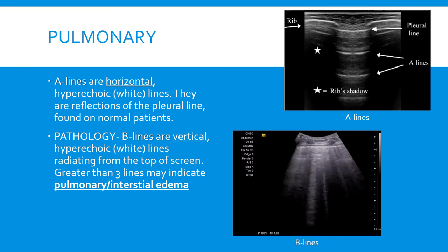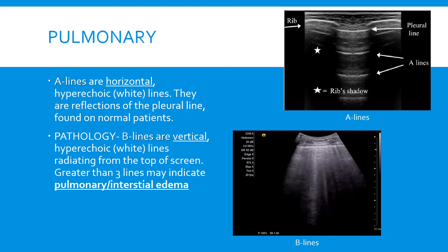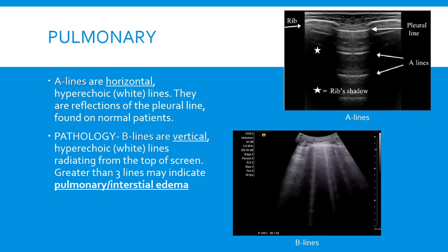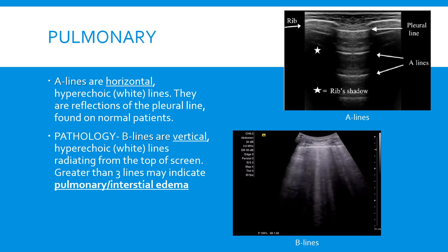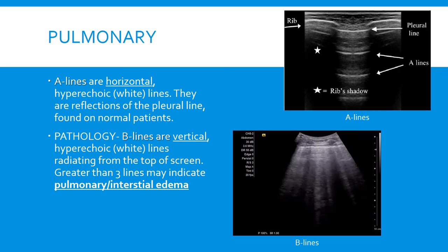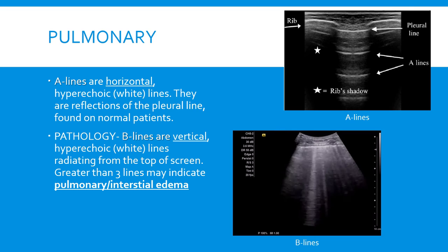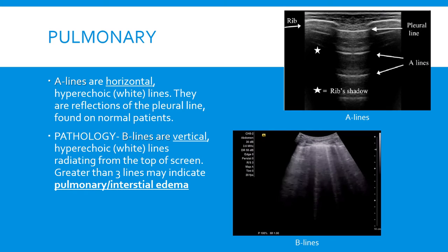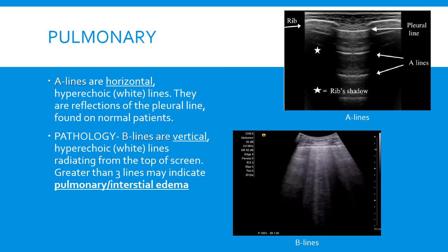Now, A lines and B lines — just remember A lines are awesome and B lines are bad. A lines are horizontal hyperechoic or white lines, and they're simply reflections of the pleural line. You'll see these in normal patients and they're nothing to worry about. B lines, however, are vertical hyperechoic white lines radiating from the top of the screen. If you're scanning a patient and you see three or more of these lines, that is very worrisome — they may have pulmonary or interstitial edema.